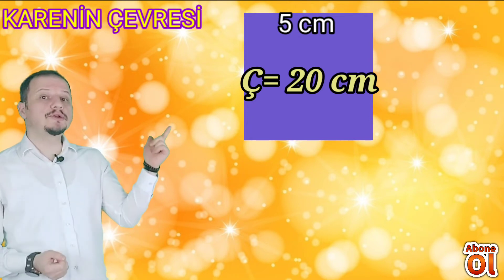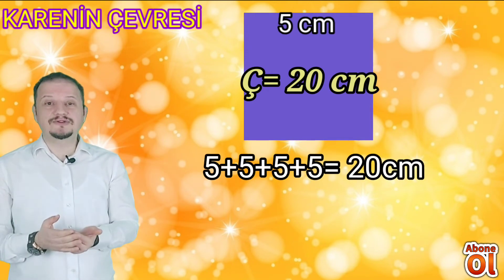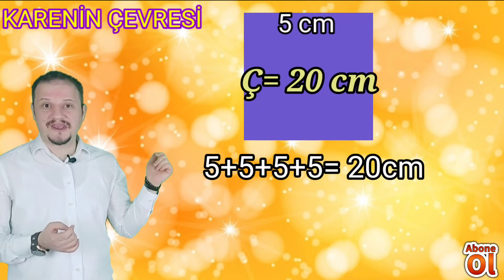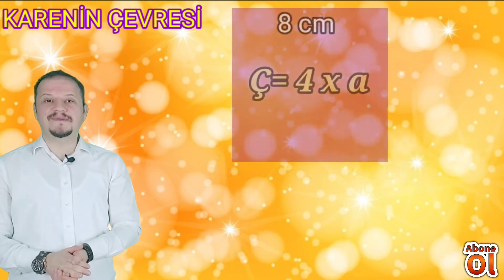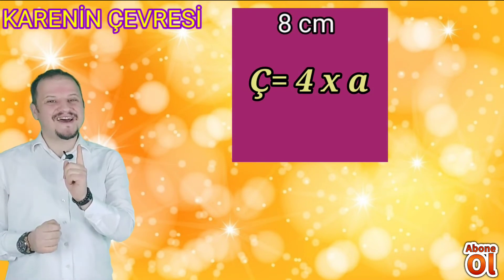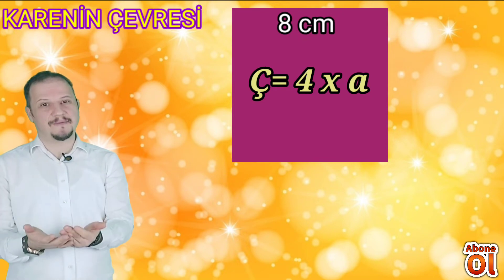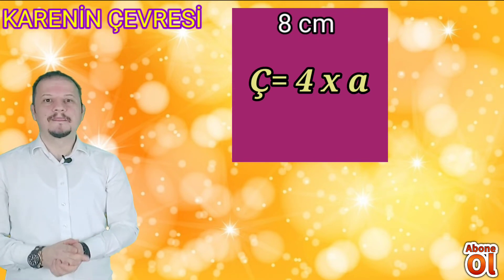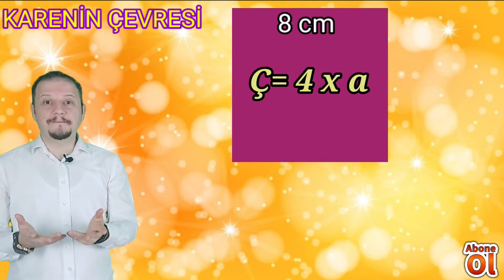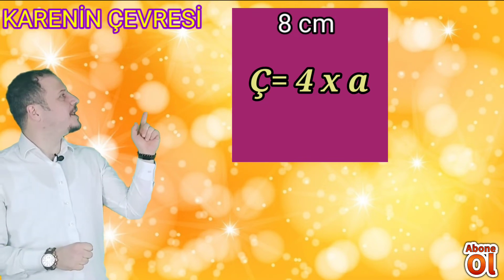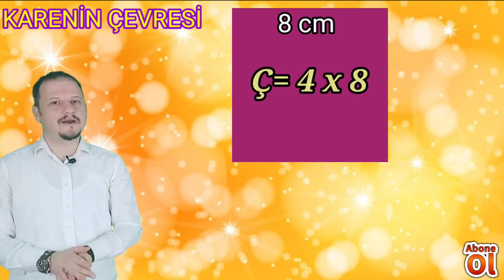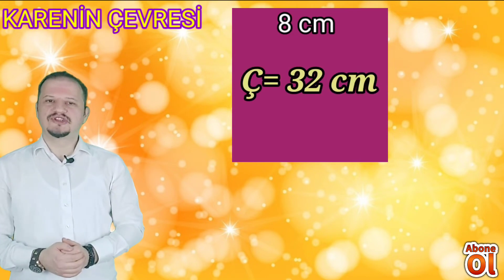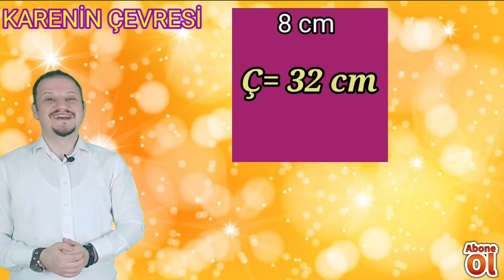4 kere 5, 20 eder. O zaman bu karenin çevresinin uzunluğu 20 santimetredir. Ya da bütün kenarlarını toplayarak da bulabiliriz: 5 + 5 + 5 + 5 = 20. Bir örnek daha: yandaki karenin bir kenarının uzunluğu 8 santimetredir. Ç = 4 × 8 = 32. O zaman bu karenin çevresi 32 santimetreymiş.